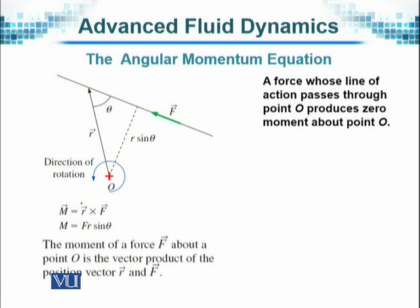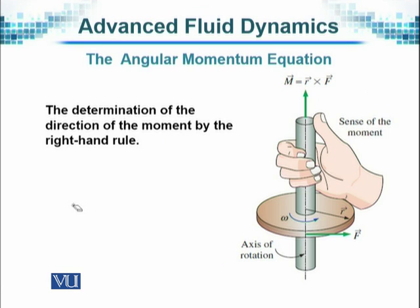The angular momentum will be given by the vector R, the radius, times the force cross F, and its direction will be obtained by considering the right-hand thumb rule that we discussed when we considered vectors or vector products. Similarly, the moment of force F about this point O is the vector product of R and F. That is, M equals R cross F, and its direction is determined by the right-hand thumb rule.